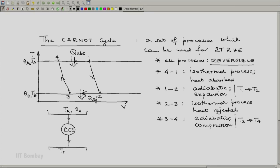There is some work done but that is something which we need not measure. The heat absorbed from the high temperature reservoir is Q_absorbed as shown here and this is the heat rejected which is Q_rejected as shown here.